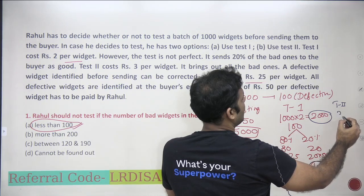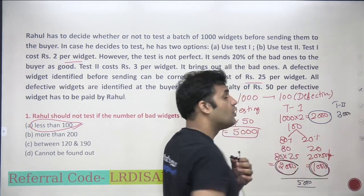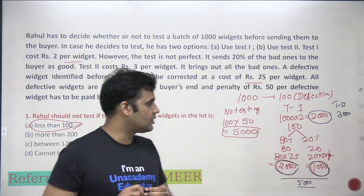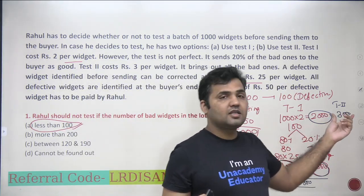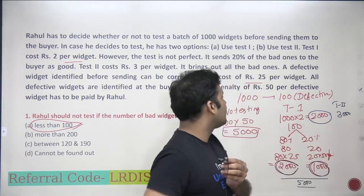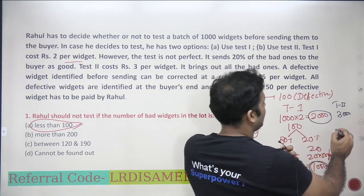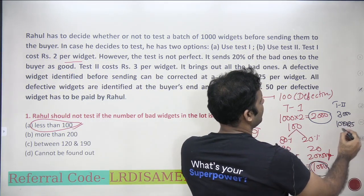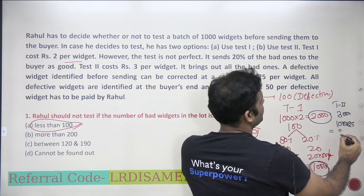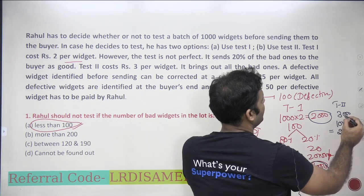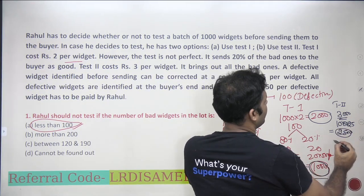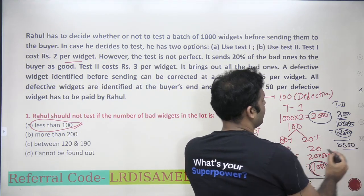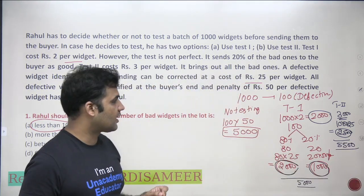If Rahul chooses Test 2, he spends 3 rupees per widget: 3 × 1000 = 3000 rupees on testing. Since Test 2 is 100% accurate, all 100 defective items are identified and corrected at 25 rupees each: 100 × 25 = 2500 rupees. Total for Test 2: 3000 + 2500 = 5500 rupees.